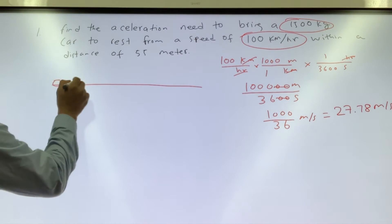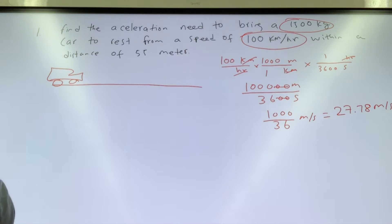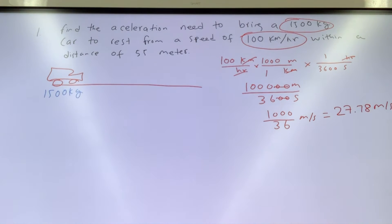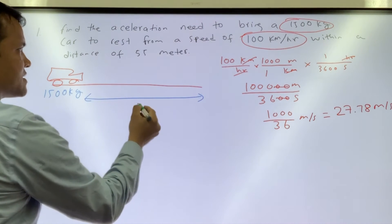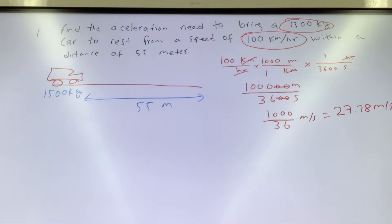There is a car which is 1500 kilograms, distance is 55 meters. So how much acceleration do we have to apply so that when the car comes from 0 meter to 55 meter it stops?